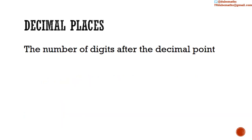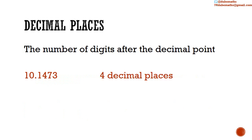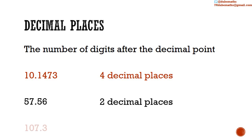To check the number of decimal places a number contains, we check how many digits there are after the decimal point. Thus, 10.1473 has 4 decimal places, 57.56 has 2 decimal places, and 107.3 has 1 decimal place.